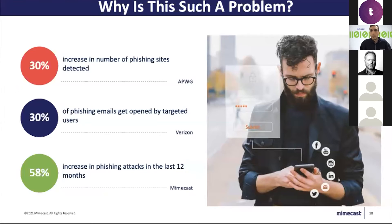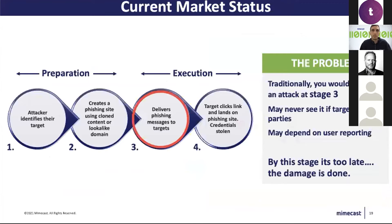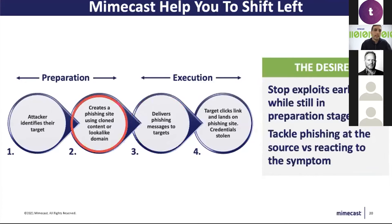Looking at the numbers: a 30% increase in phishing sites detected, a 30% increase in phishing emails opened by targeted users, and a 58% increase in phishing attacks in the past 12 months. With COVID, this has become a much bigger problem. Most vendors find these attacks when they're already being delivered to end users — at which point the website has been built, targets have been identified, and it's too late. With Brand Exploit Protect, we take it one step earlier — we want to find these attacks and domains when they are being created, taking action before any end users are attacked, reducing risk and keeping your brand, customers and employees as safe as possible.